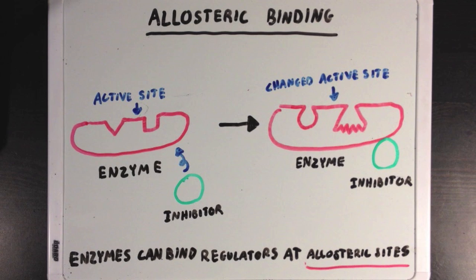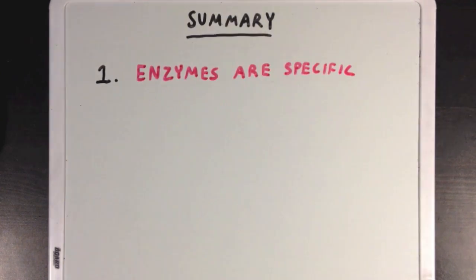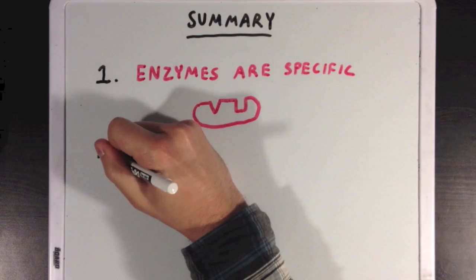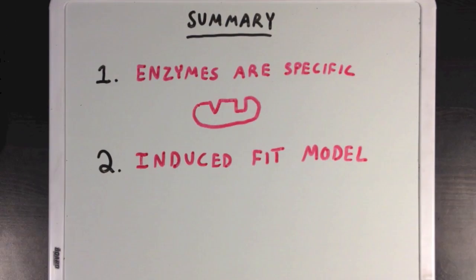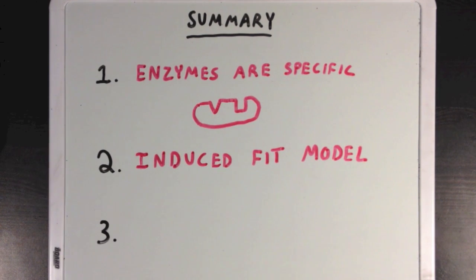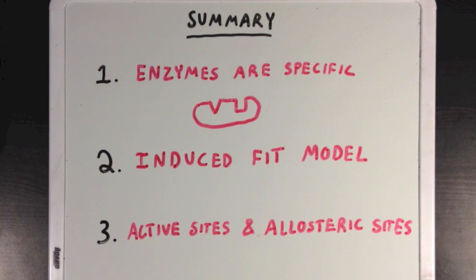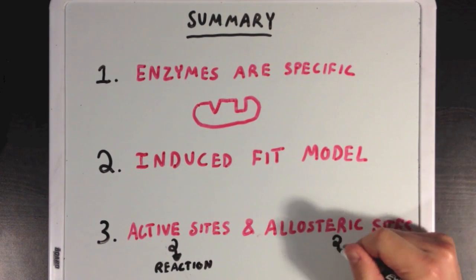Allosteric sites refer to any binding site outside of the active site. Allosterically binding molecules can either be activators or inhibitors — any regulating molecule. To summarize: first, enzymes are specific, and each can bind only specific substrates to catalyze specific reactions. Second, the induced fit model shows that enzymes bind their substrates most tightly in the middle of a reaction at the transition state. Finally, enzymes have both active sites, where the reaction takes place, and allosteric sites, where regulation takes place.